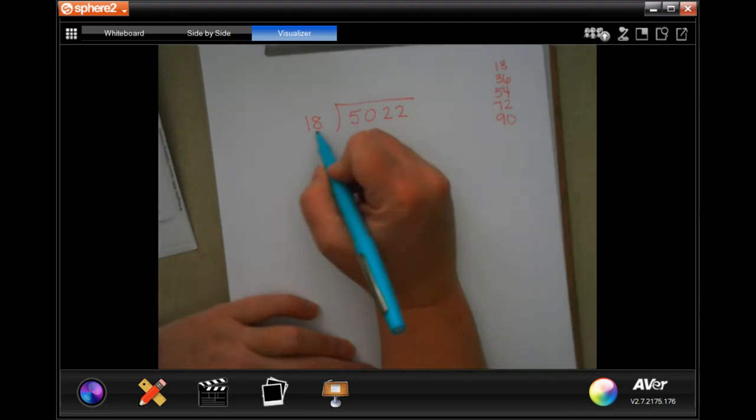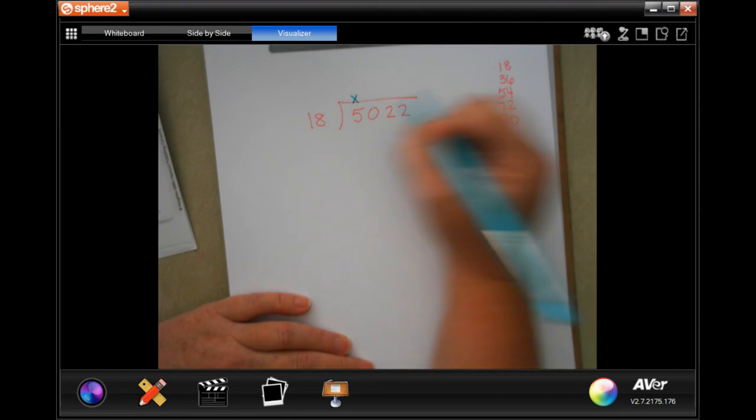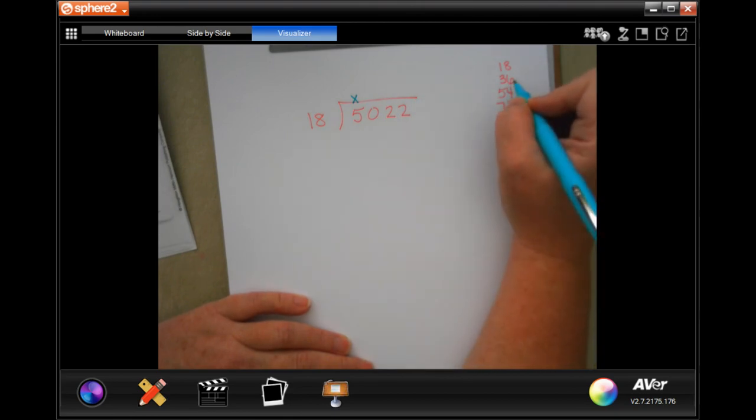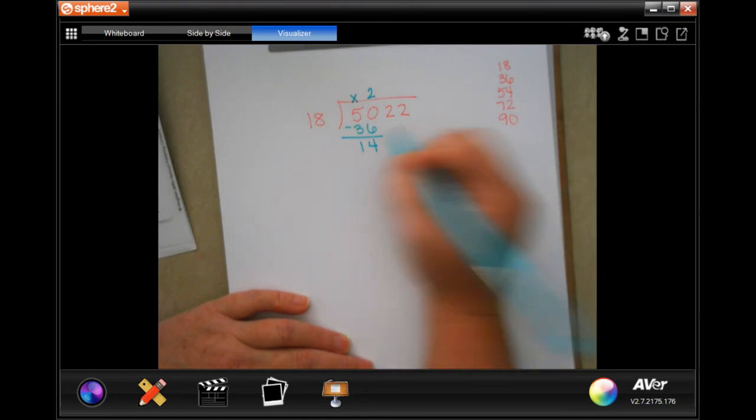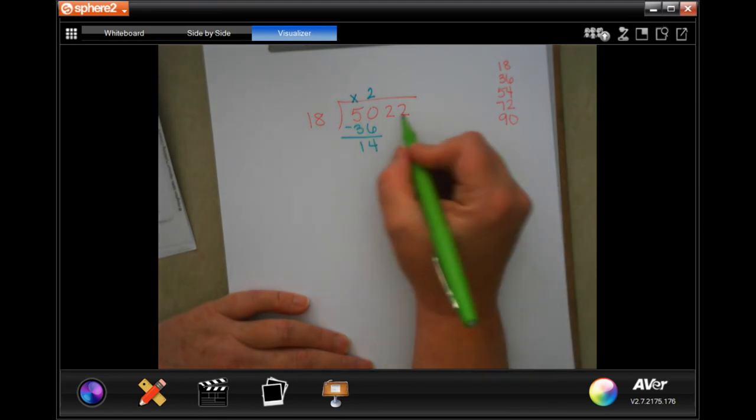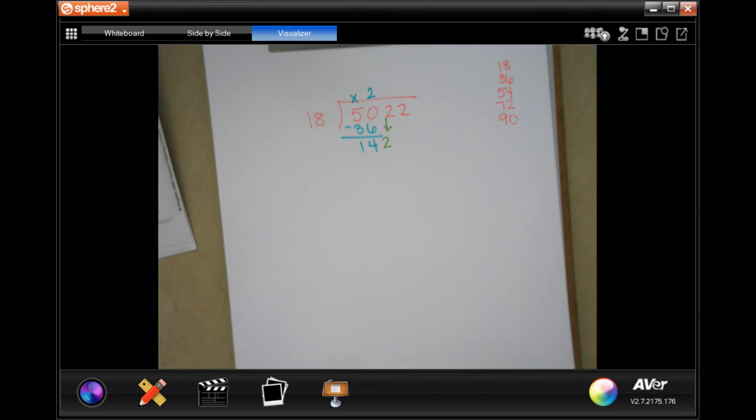I'm going to use my calculator for my multiples of 36. Of 18. 18 times 3 is 54. 18 times 4 is 72. And 18 times 5 is 90. And hopefully I won't have to go past that. So 18 is not going to go into 5 plate holder. 18 will go into 50. Looks like the closest I'm going to get is 36 about two times, which was 36.